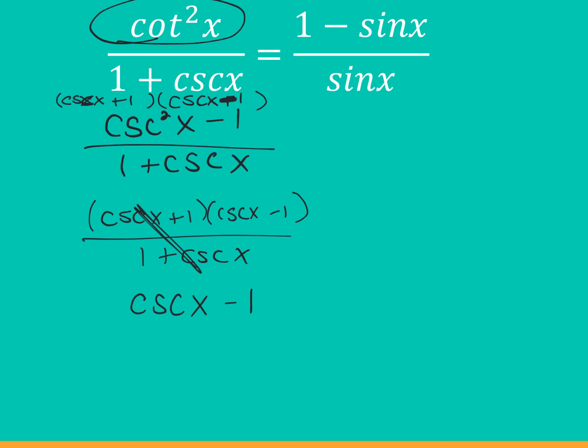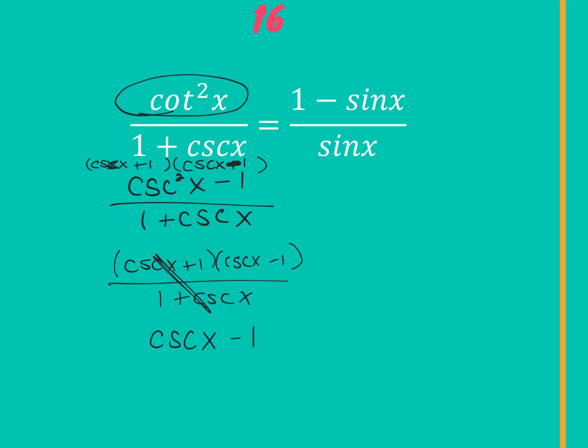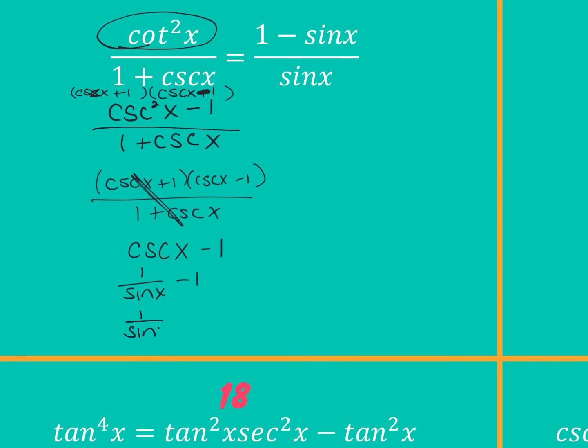How do you know when to split versus keep it? You can't split a bottom. But cotangent and cosecant are both in the same Pythagorean identity, so I'd try to do something with that — that's what makes me work the top. It doesn't mean it's the only way. I can make this one over sine of x minus one, give it a like denominator, and I get one minus sine of x over sine of x.